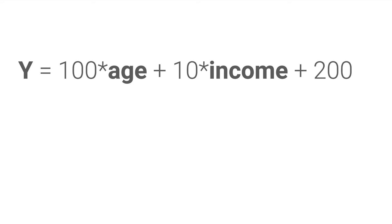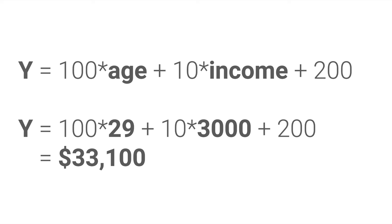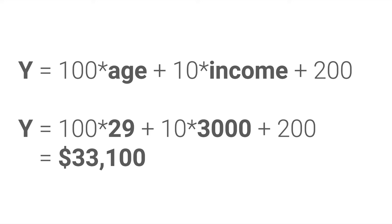Another example is linear regression. The model you see here gives the predicted loan size for a customer based on their age and income. We can immediately see why someone aged 29 with $3,000 monthly income is predicted to have a maximum loan of $33,100. It is also easy to see the general trends captured by the model — the loan size will increase by $100 for every year a person ages and $10 for every additional dollar of income.